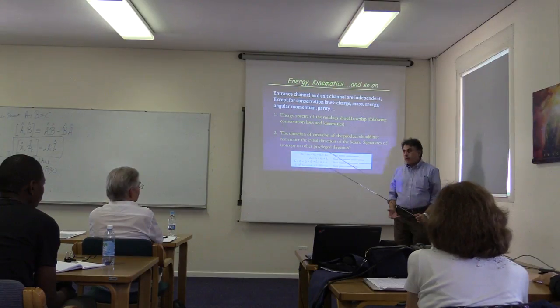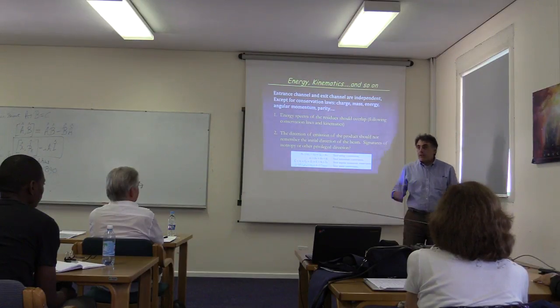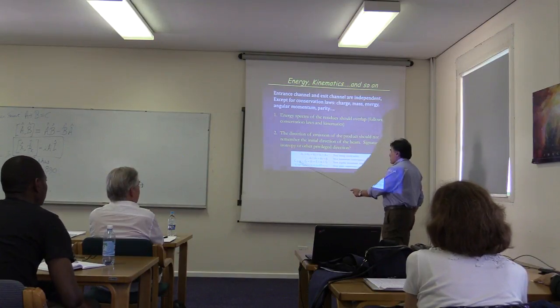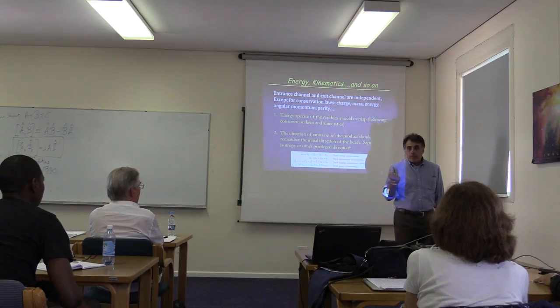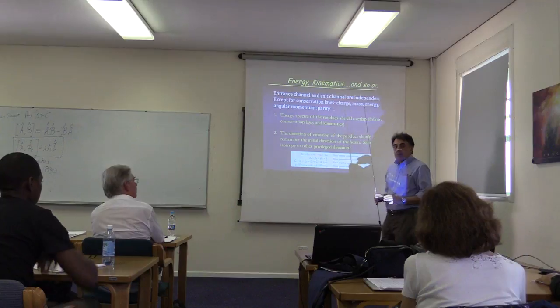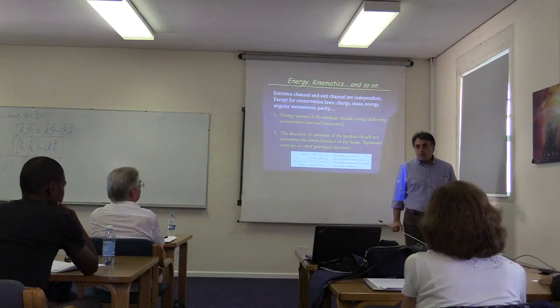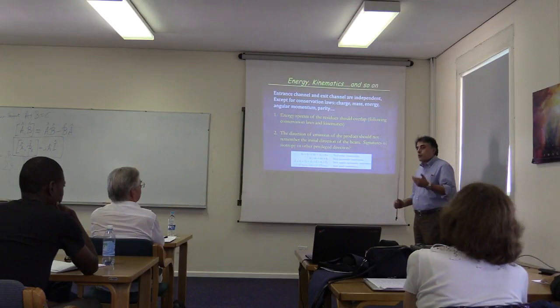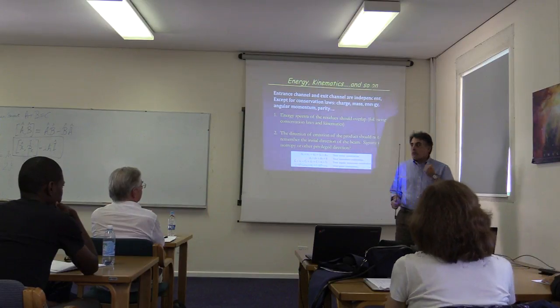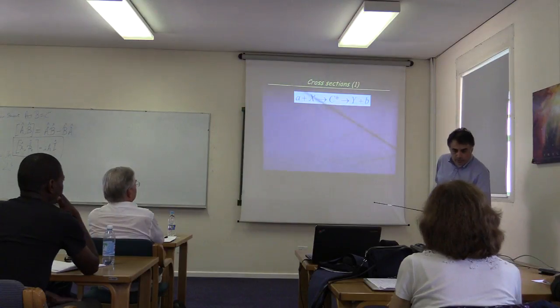So emission should be everywhere. But, in principle, there can be some privileged direction. Some direction which has still a particular meaning. Why is this? Because, remember, we need to conserve the angular momentum. And the angular momentum is always considered to be a direction around which something may happen. So if we observe some anisotropy, this anisotropy should not be related to the fact that we have created an equilibrated system. It should be related to the fact that this system may have some angular momentum that is conserved. But we look for this later.